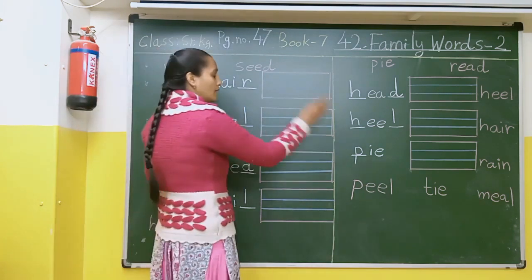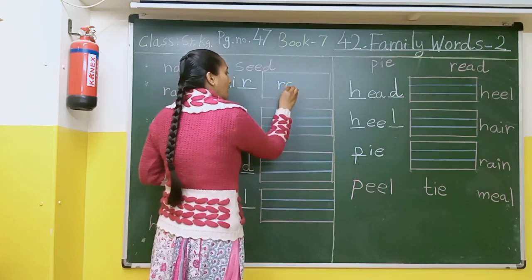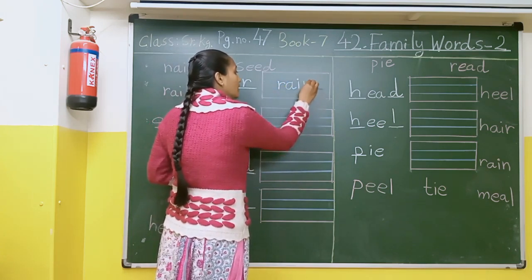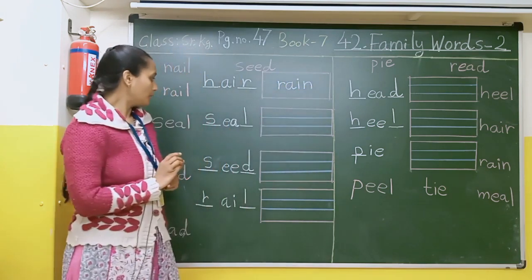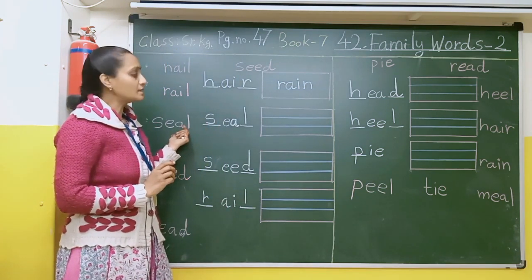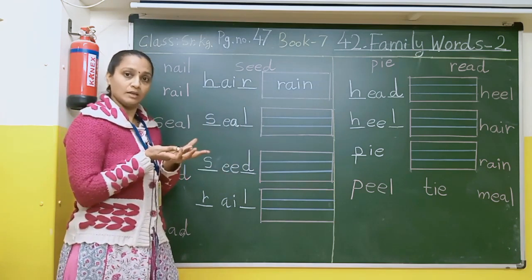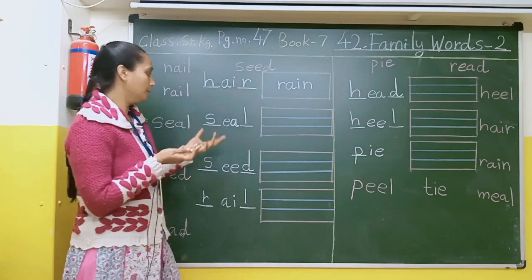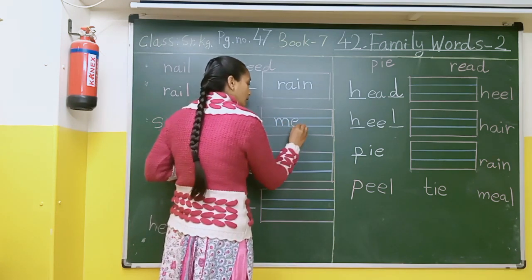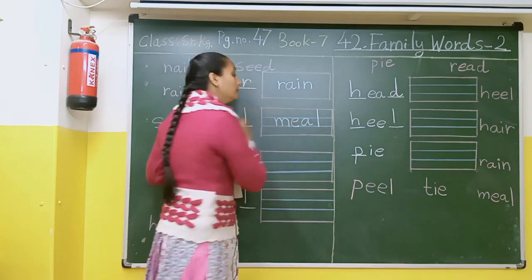Rain yaani baarish — baarish ka spelling kya hoga? R-A-I-N, rain. After that, here there is a spelling of seal — seal ke saath hum likhenge meal. Meal yaani khaane ki thal, M-E-A-L, meal.